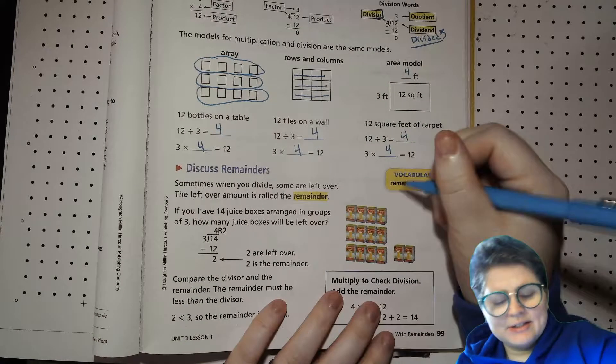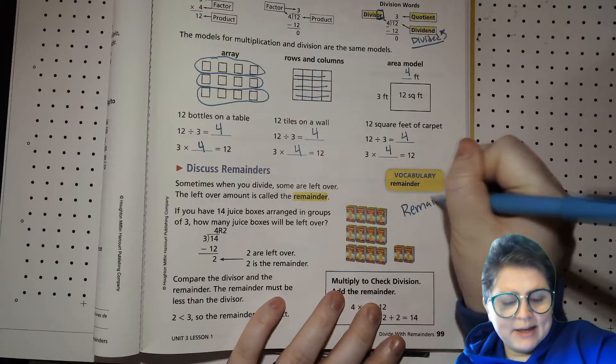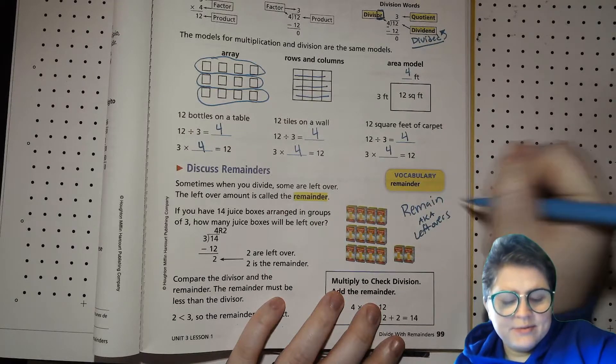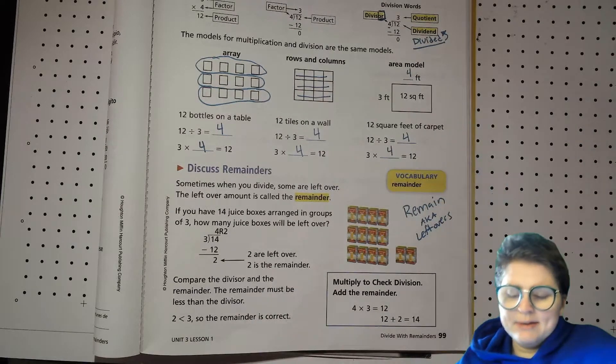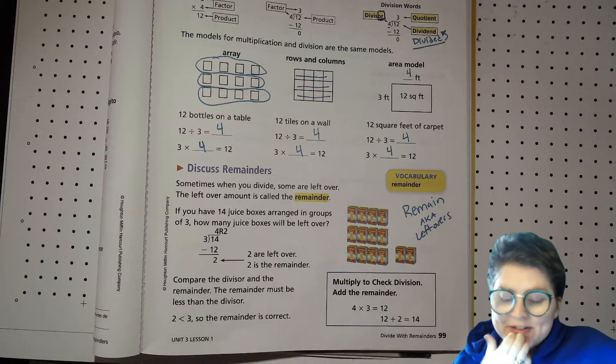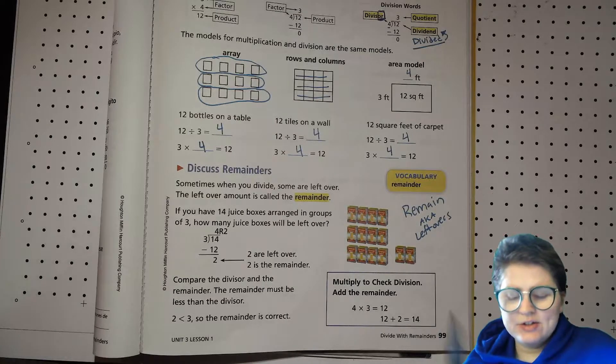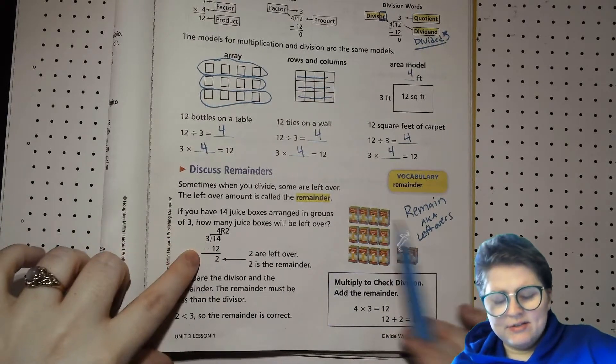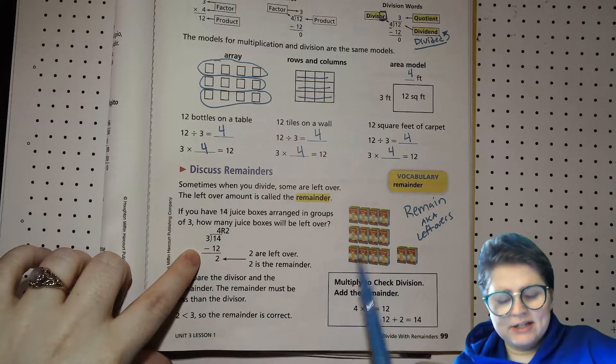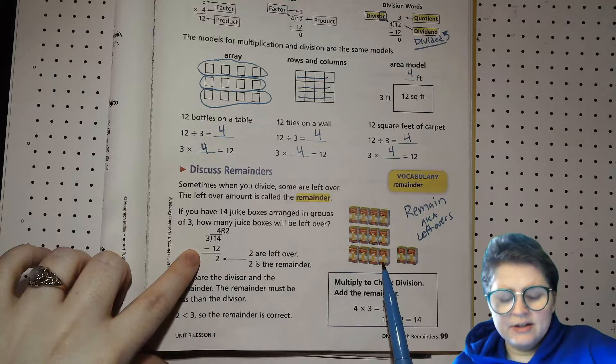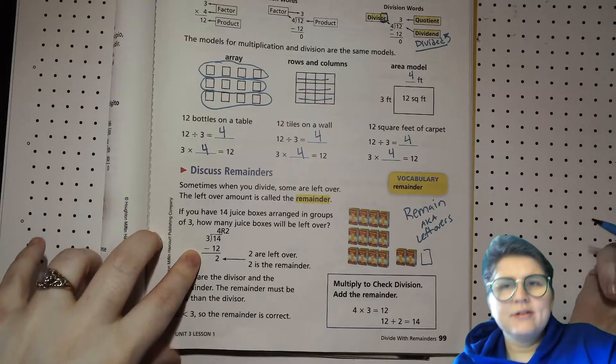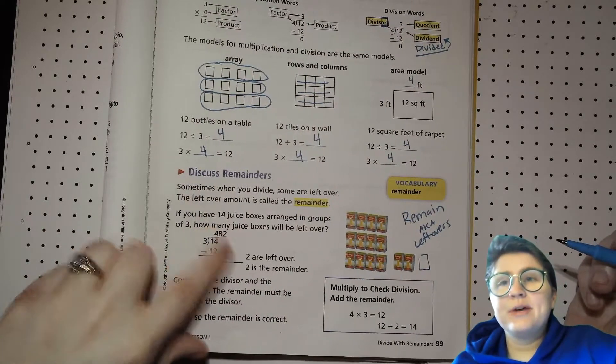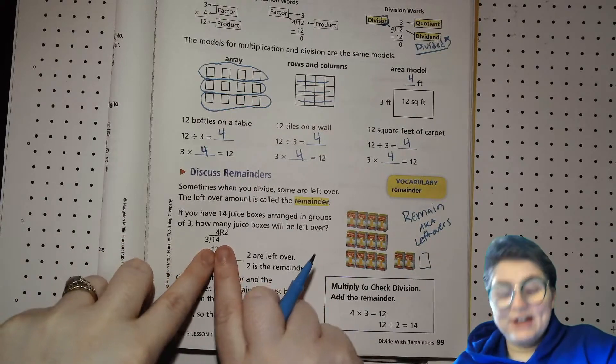Now, we're going to talk about remainders. And a remainder is the number of things that remain, also known as leftovers. Let's take a look at this problem. Sometimes when you divide, some are left over. The leftover amount is called the remainder. If you have 14 juice boxes arranged in groups of 3, how many juice boxes will be left over? Well, you'll have groups of 3 of the 14. So, you have 1, 2, 3, 4, 5, 6, 7, 8, 9, 10, 11, 12. But then there's these two. And you would need one more, but you don't have one more. So, you don't have 5 solid groups. You have 4 groups, and there's 2 left over.